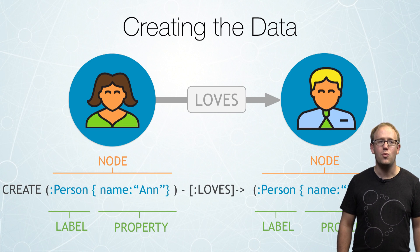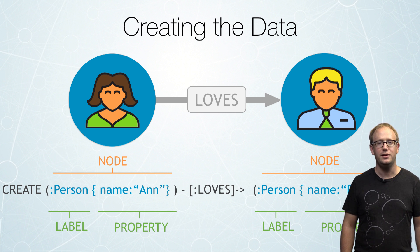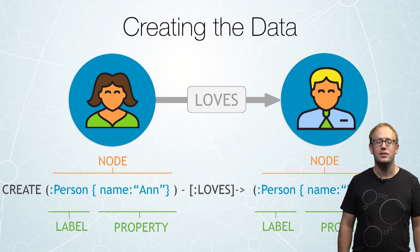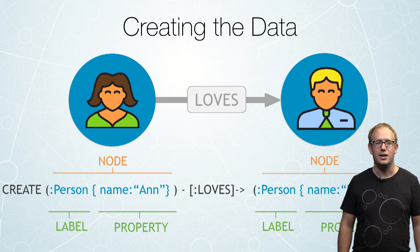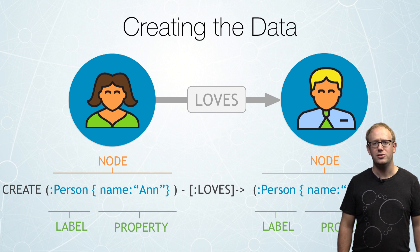Let's say that we wanted to create this data that represents that Ann loves Dan. This is quite a simple Cypher statement. We simply say CREATE and we provide the label of our node — in this case it is a person-labeled node — and we say the properties, sort of like in JSON syntax.